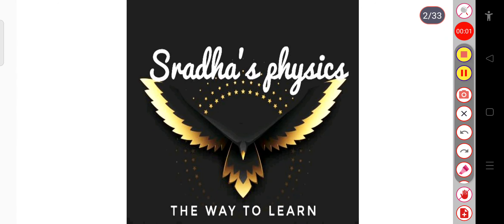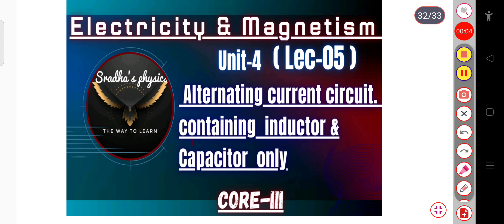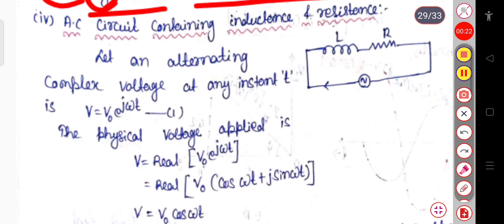Hello learners, welcome back to my channel, Sradha's Physics. We have already completed alternating current circuits containing only inductor, only capacitor, and only resistor. Now in this lecture we will see an alternating current circuit containing both an inductor as well as a capacitor.